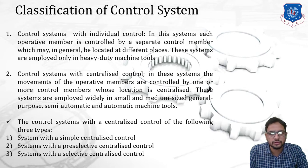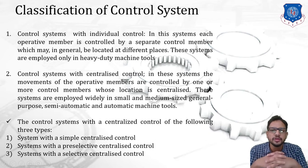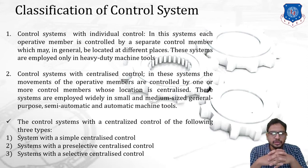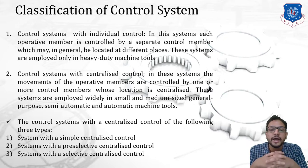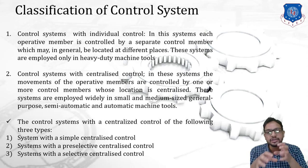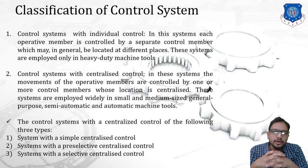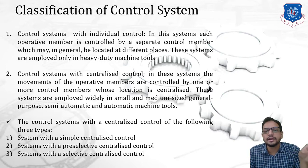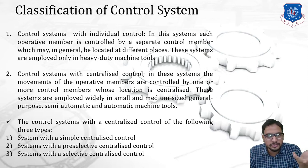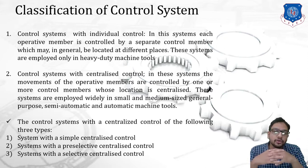Now let us see the classification of control systems. The first classification is based on individual control. In this system, each operative member is controlled by a separate control member, which may be located at a different place. These systems are employed only in heavy duty machine tools. For example, operative members such as a gear shifting fork, rack, hydraulic cylinder, or hydraulic valve are each controlled by a separate control member. The control members — push button, knob, hand wheel, or lever — are located at different places.